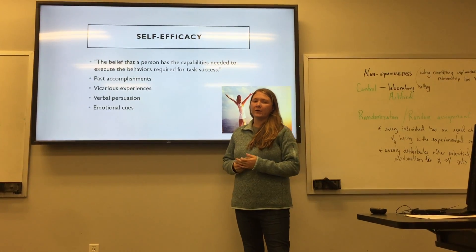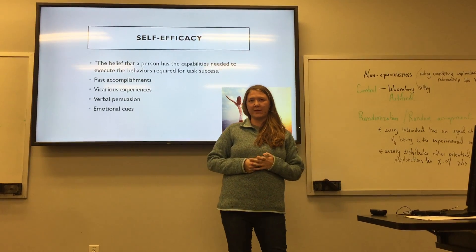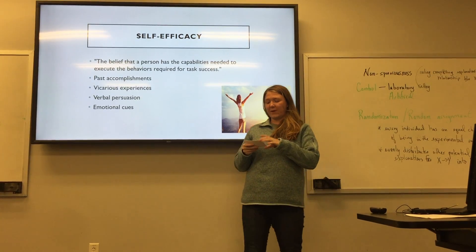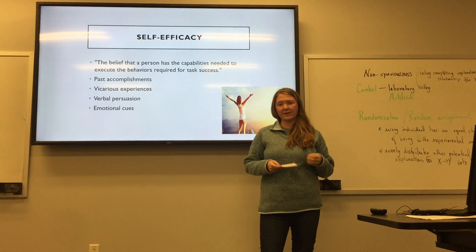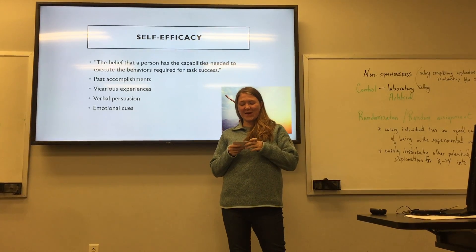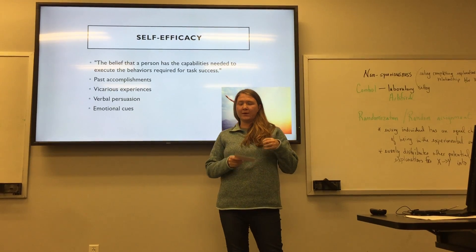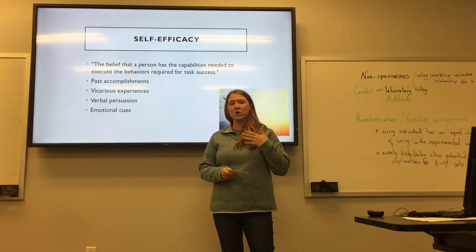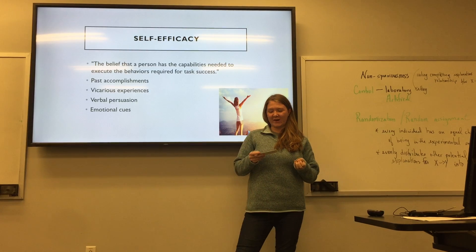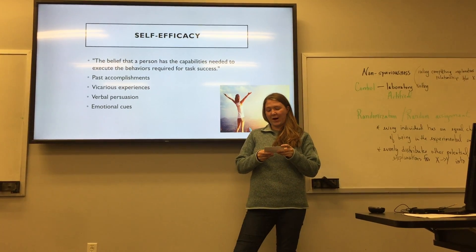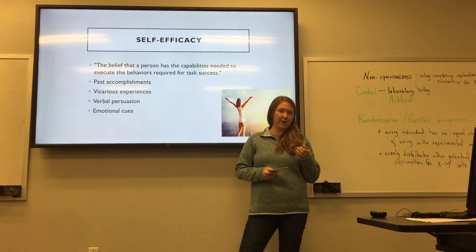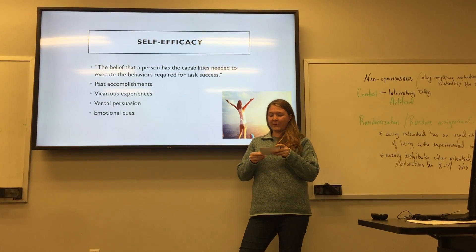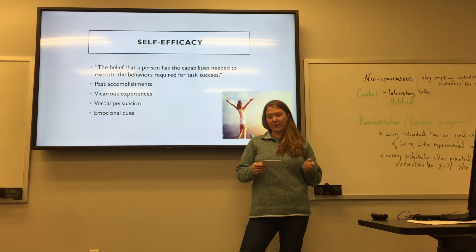Going more into expectancy, which leads to self-efficacy — self-efficacy is also divided into four different types. There's past accomplishments, which is the goal that one has achieved throughout their past. Then there's vicarious experiences, which is delivering a feeling or experience from someone else, like through a story. Then there's verbal persuasion, which is being inspired by someone through their words, like giving encouragement and telling them they're doing a good job. Then there are emotional cues, which is a feeling that can either be beneficial or harmful to completing a job.